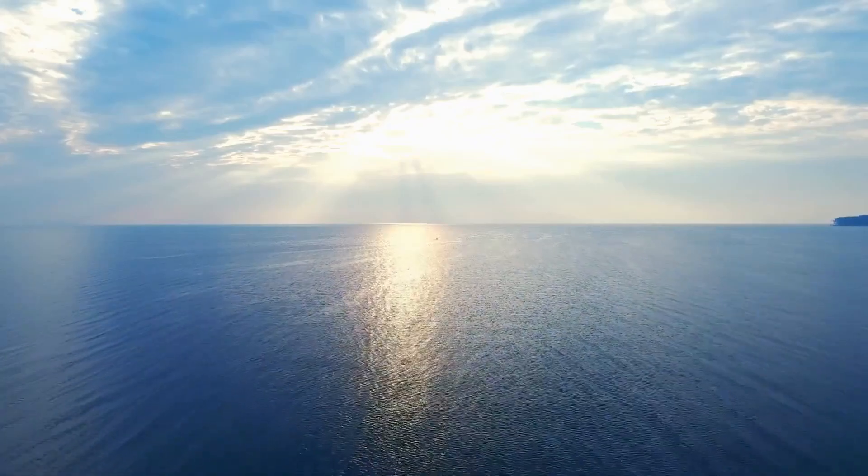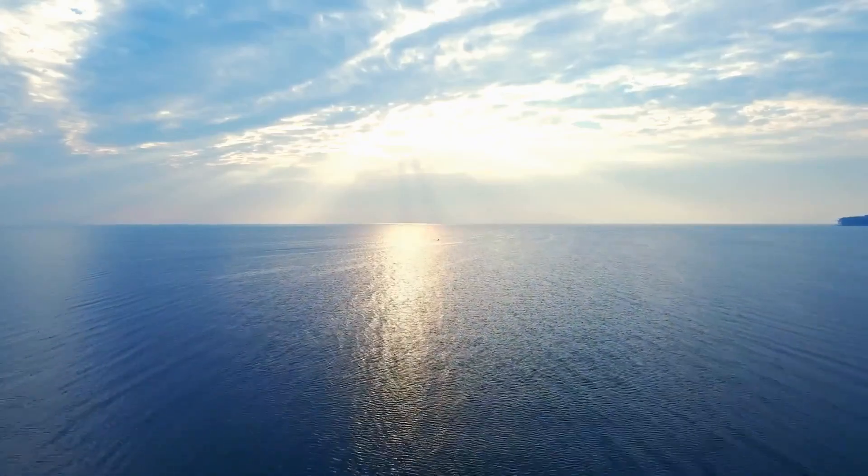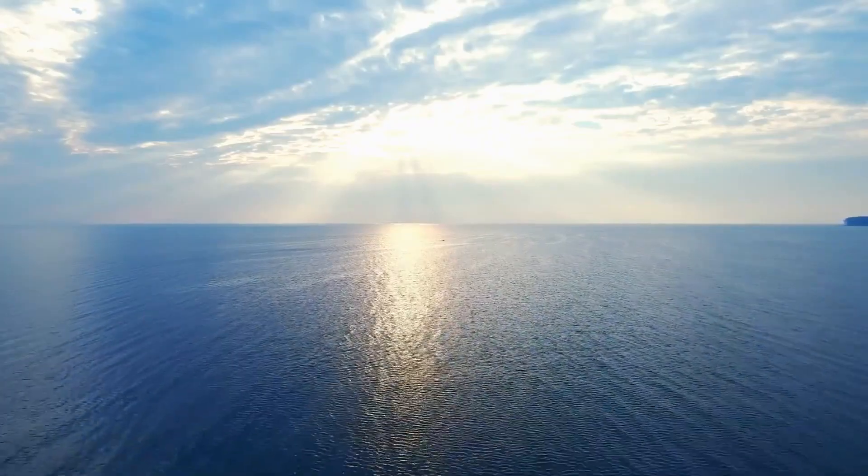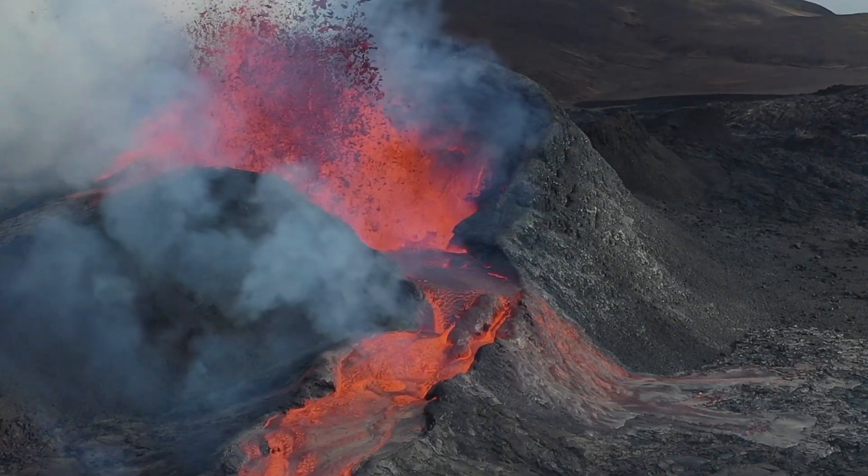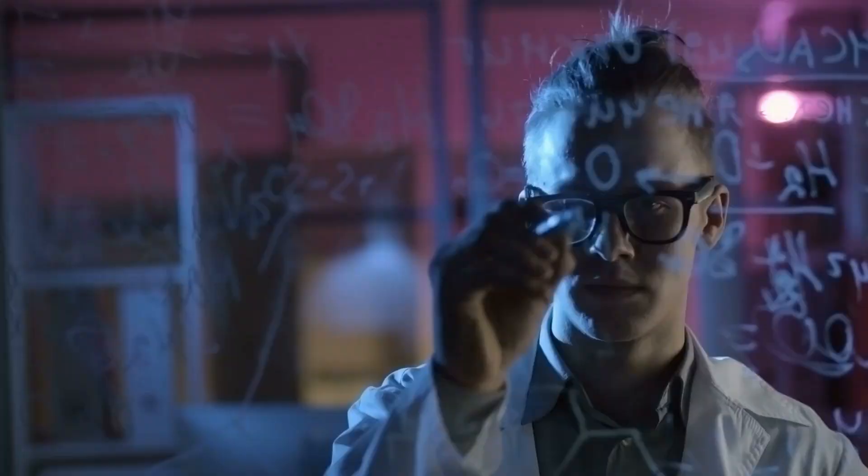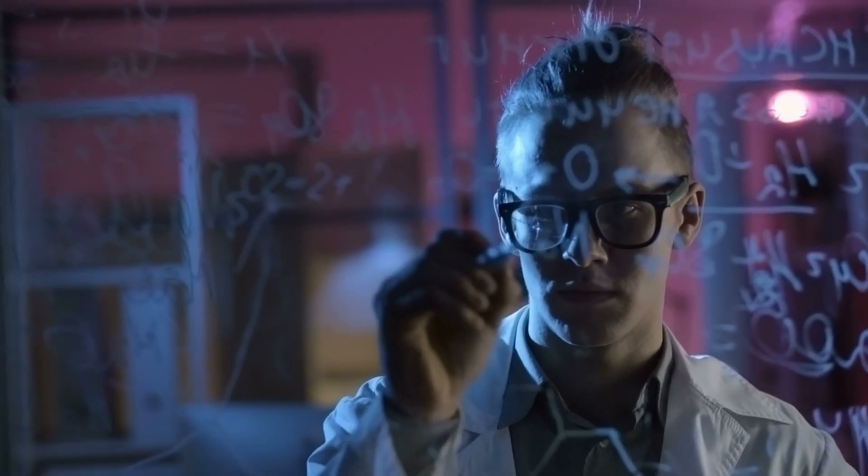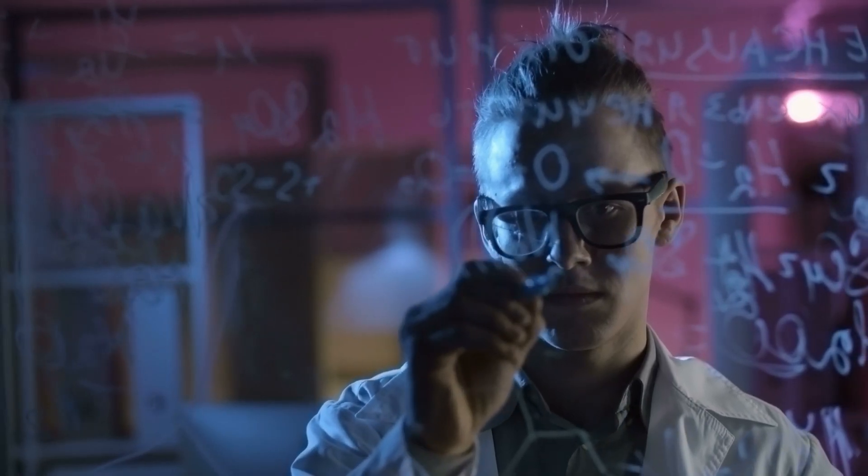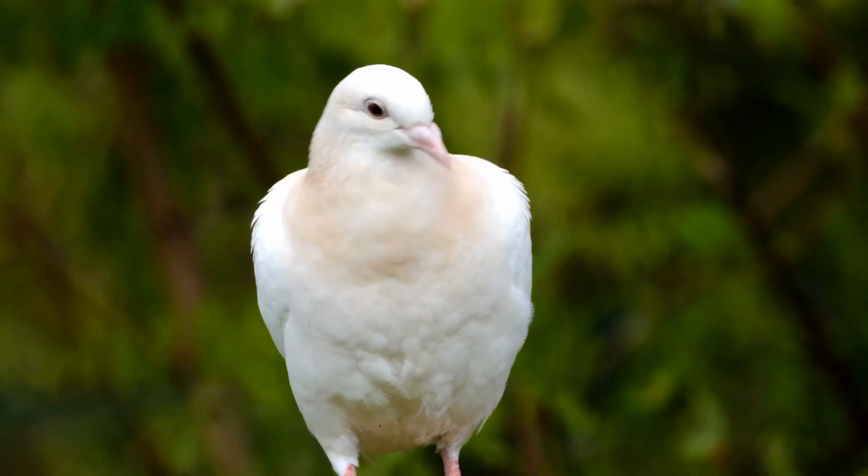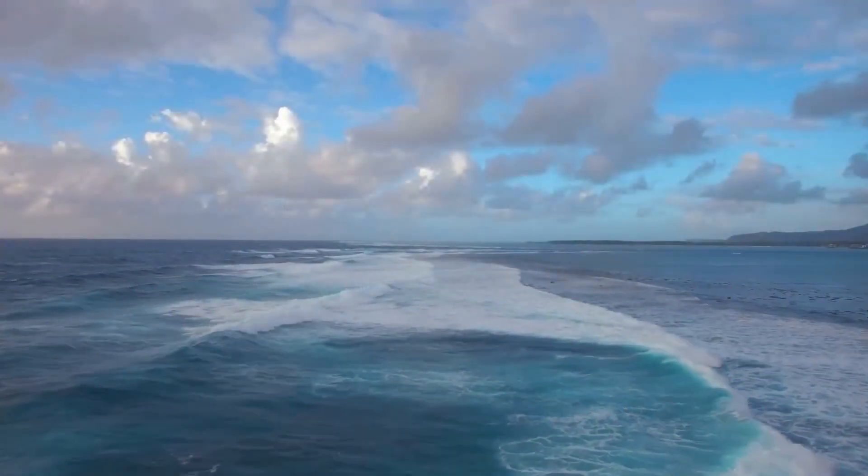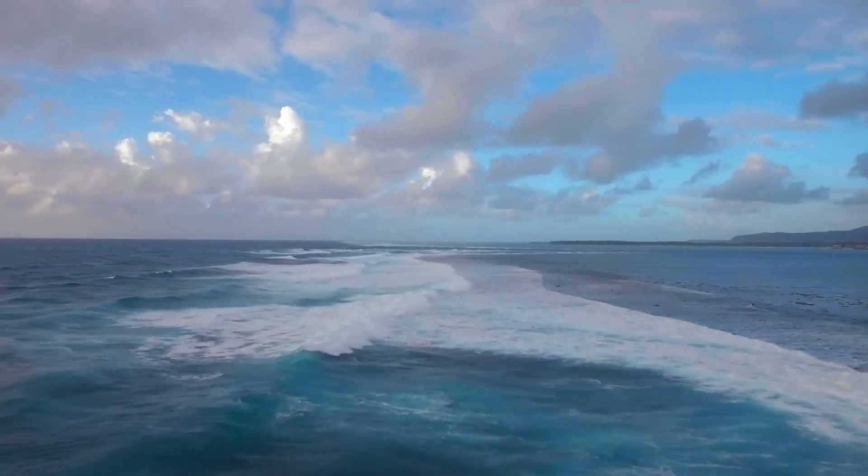The question of how water came to be on Earth is a captivating topic that has puzzled scientists for years. From comets to volcanic activity and even extraterrestrial sources, theories have been proposed but none have been conclusively proven. The presence of water is crucial for the development and sustenance of life on Earth, making the question of its origin even more intriguing.